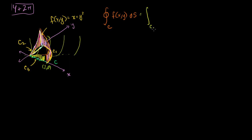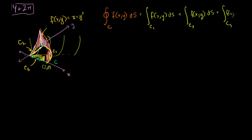This will be equal to the line integral along C1 of f(x,y) ds, plus the line integral along C2 of f(x,y) ds, plus the line integral along C3 of f(x,y) ds. In the last video, we figured out this first part — the first curvy wall. Its surface area was 4 + 2π. Now we have to figure out the other two parts.